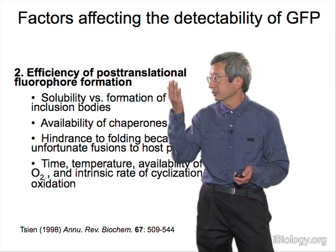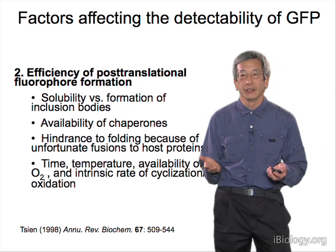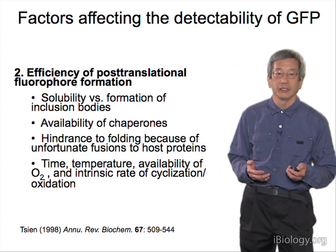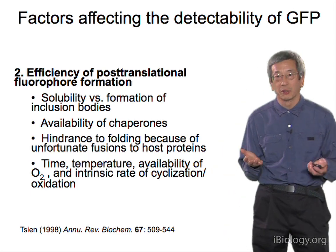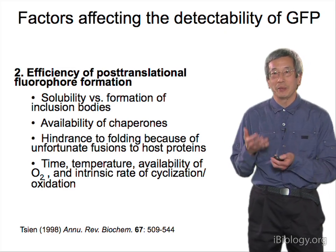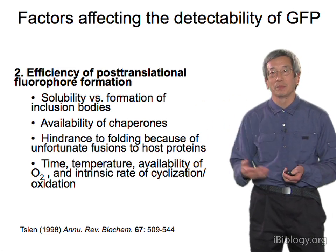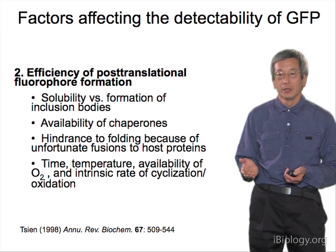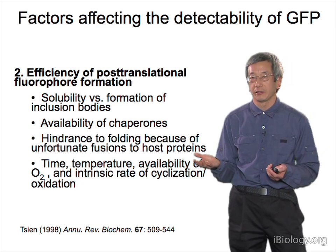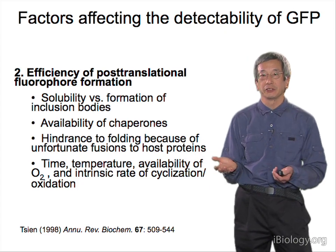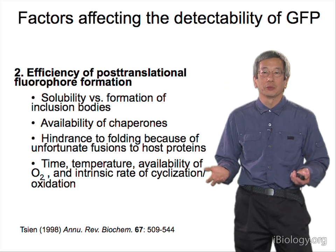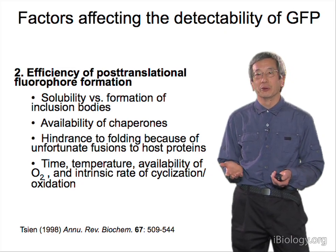Regarding efficiency of post-translational fluorophore formation: originally, if you tried to express GFP heavily in bacteria, especially at warm temperatures, the protein would crash out and denature. Having chaperones available to help fold proteins improves this, and this has even been used as a bioassay for the presence of chaperones — use a poorly-folding GFP and see whether chaperones can rescue it. A lot of the time when you fuse GFP to a host protein, that fusion has unfortunate and hard-to-predict properties, and the protein just doesn't express well. Sometimes people already know their host protein won't tolerate anything on the N-terminus, so don't be surprised if GFP placed there doesn't work.